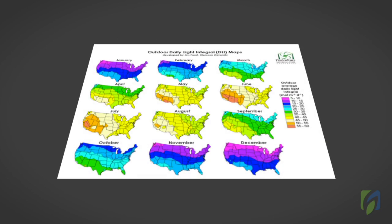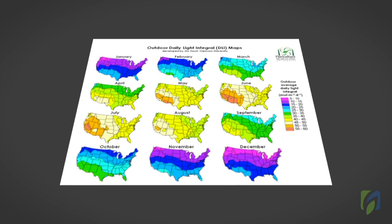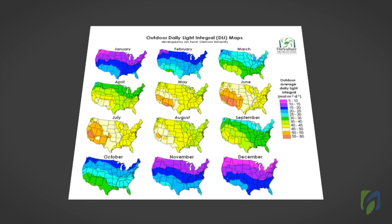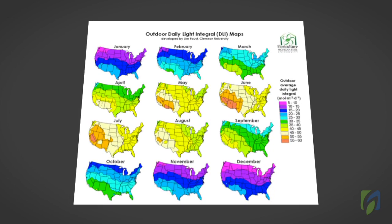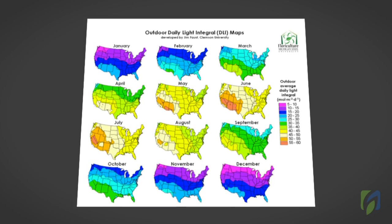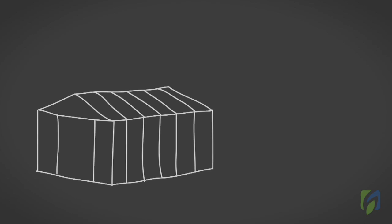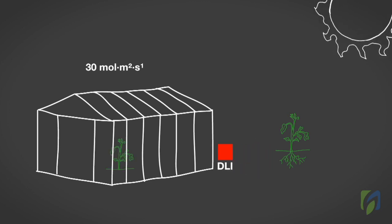Greenhouse growers can estimate the outdoor DLI levels for their operations by locating their facilities on a DLI map provided by Clemson University. These maps show monthly outdoor DLI throughout the United States. Remember, these values are for the outdoors. In a greenhouse, the DLI values seldom exceed 30 moles of light per square meter per day. To approximate the DLI values in your greenhouse, you need to reduce the outdoor value by 40 to 70%. This gives you a rough estimate of the DLI values that your crop in your greenhouse are receiving each month.